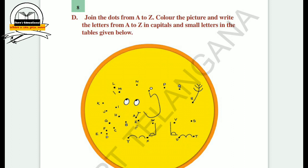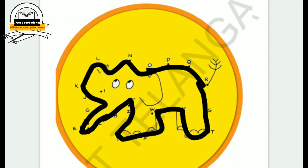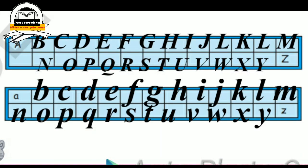The D bit: Join the dots from A to Z and color the picture. Write the letters from A to Z in capital and small letters in the table given below. By joining the dots from A to Z, you can get an elephant. Draw the elephant with the help of alphabets, then color the picture. After that, write capital and small letters from A to Z in the spaces given.